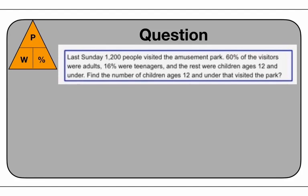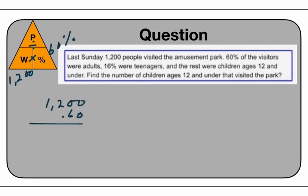Find the number of children ages 12 and under that visited the park. We have a whole — 1,200 people visited the park. 60% of the visitors were adults, 16% were teenagers. We actually need to solve for two different things. First, let's figure out how many were adults — we need 60%. So we say: what's 1,200 times 0.60? Multiply this out. Your decimal comes over two spaces. When you multiply this, it's going to be 720. So adults is going to be 720 people.